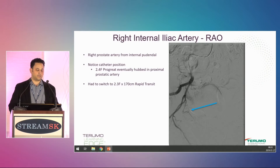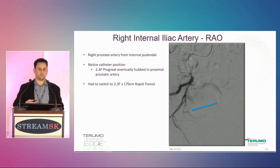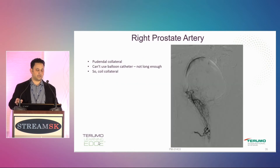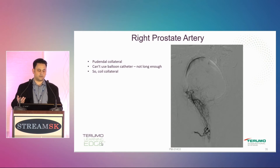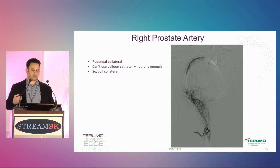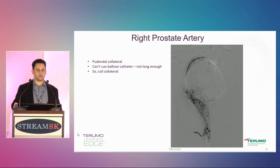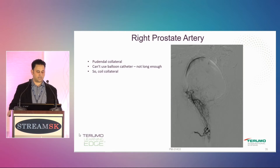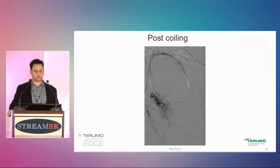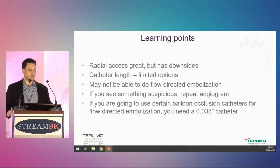The prostate artery arose from the internal pudendal artery. My catheter position was okay and I was able to get into the prostate artery with a two-French 450 Progreat. The problem was that when I was in the prostate artery, I saw a pudendal artery collateral. I needed to go down and coil that artery, but at 150 centimeters my five French was hubbed — I didn't have enough room from radial. I switched to a 170 centimeter Rapid Transit catheter, got down into the branch, coiled it off, came back, and the prostate shot looked okay.